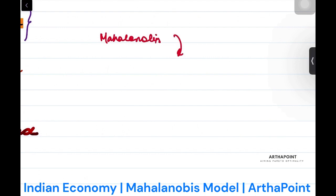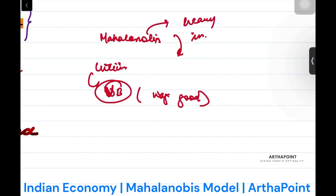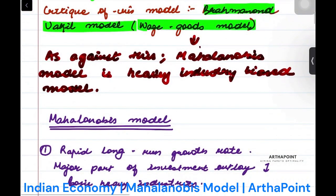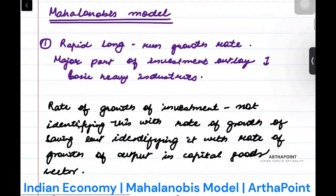This criticism is the Vakil Brahmanand model, also called the wage goods model. As against this, Mahalanobis model is called the heavy industry biased model.